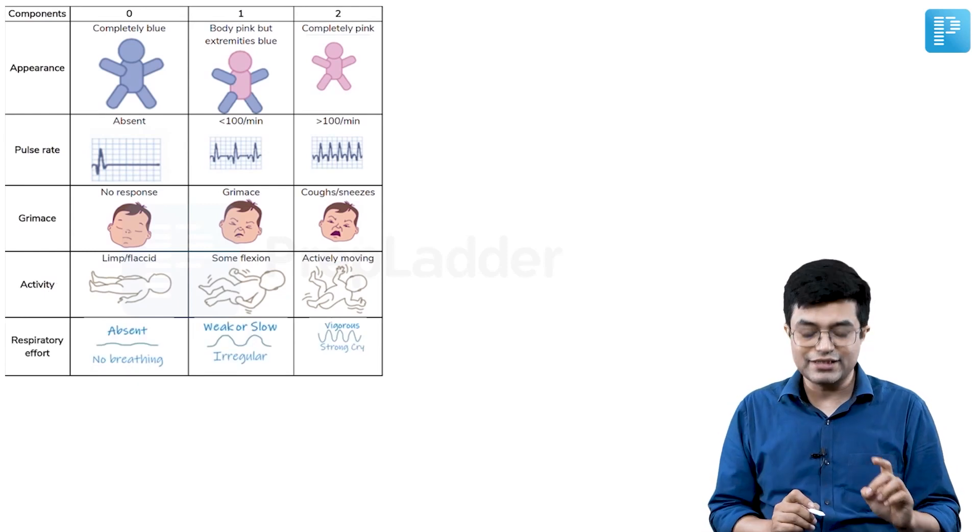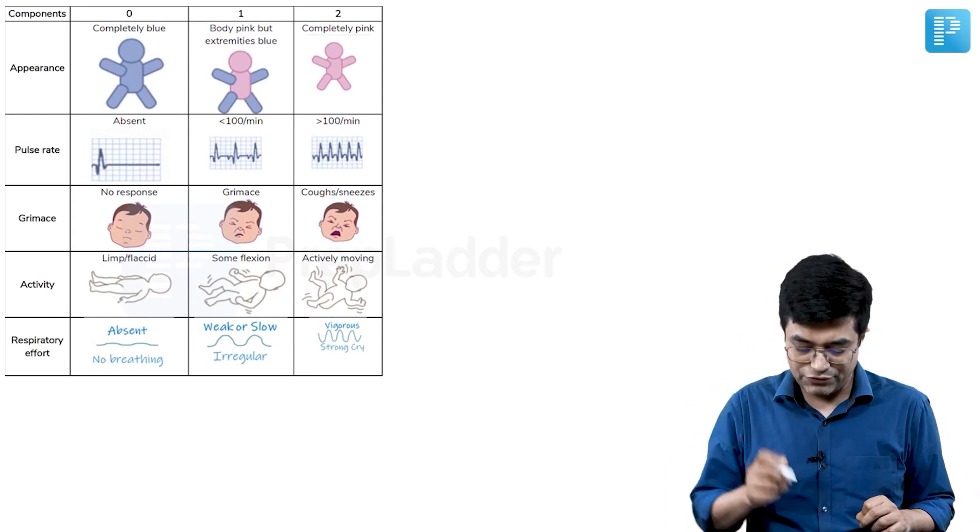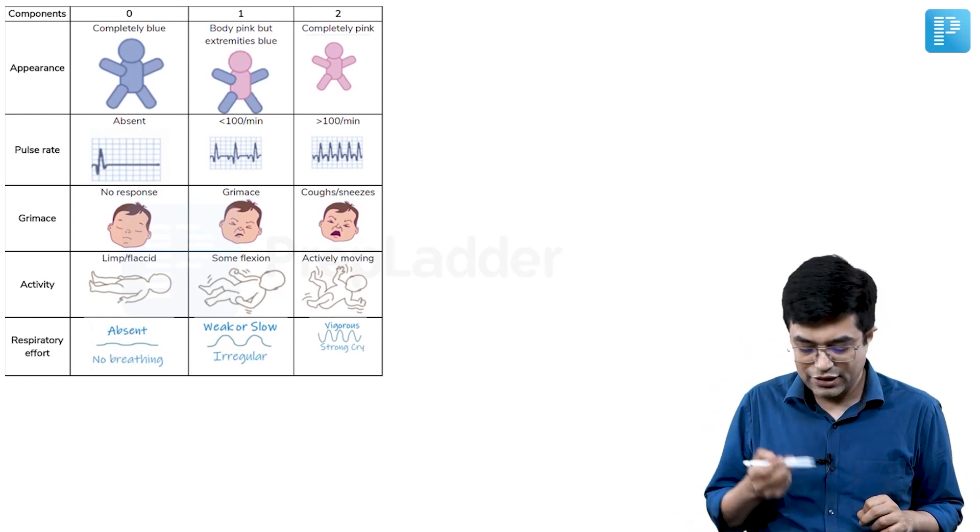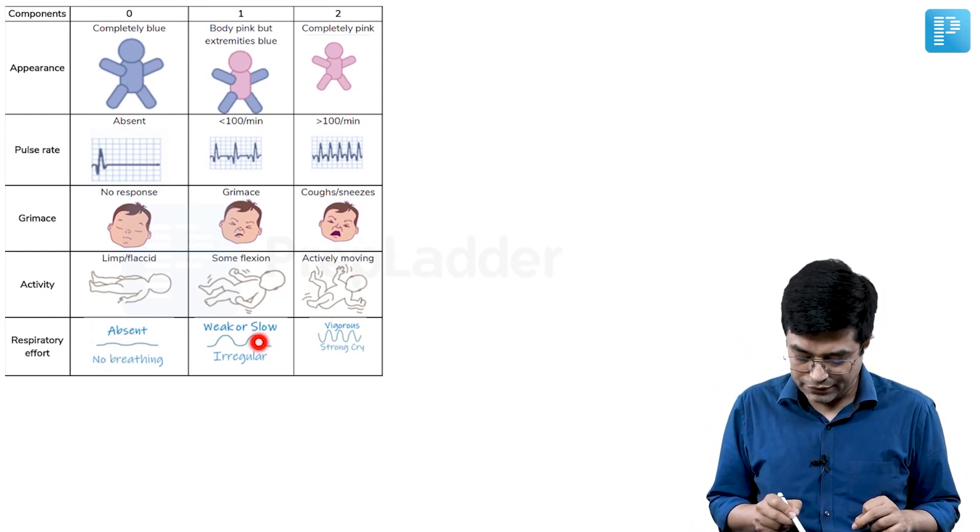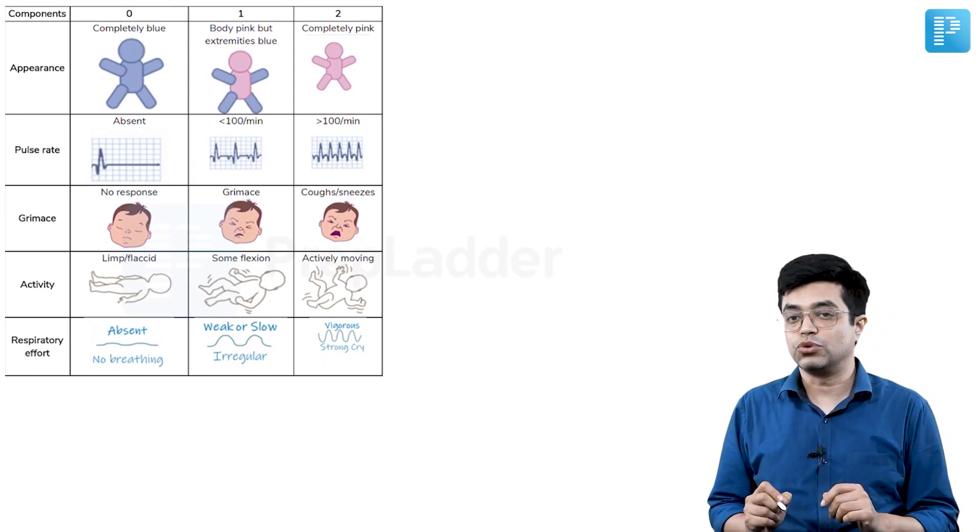And the fifth component is R, that is respiratory effort. Remember, it is not respiratory rate, it is respiratory effort. If there is no breathing, absent, score of 0. If it is weak or slow, we give the score of 1. And if it is vigorous and the child is crying, we give the score of 2.